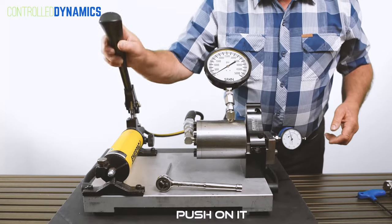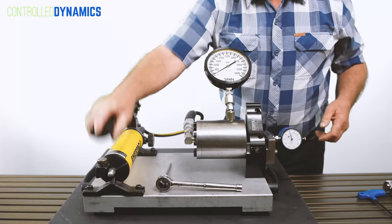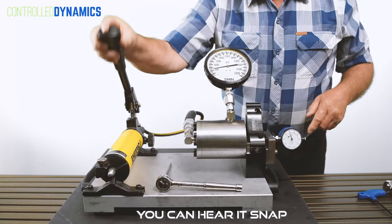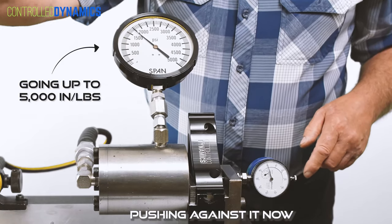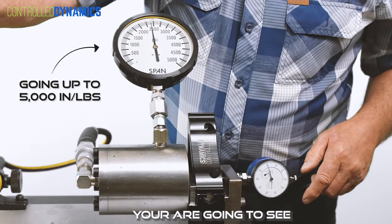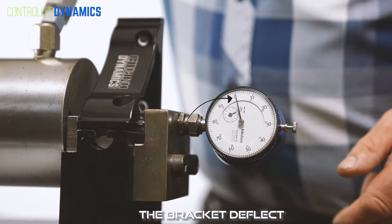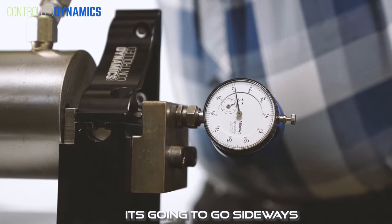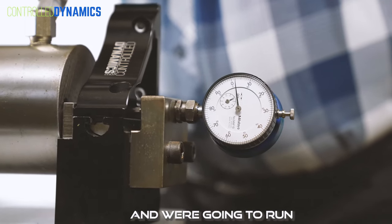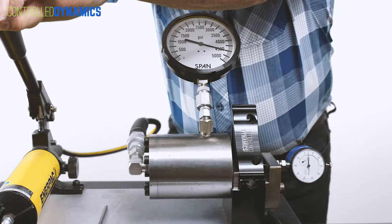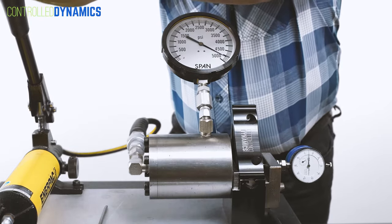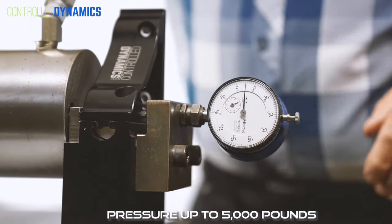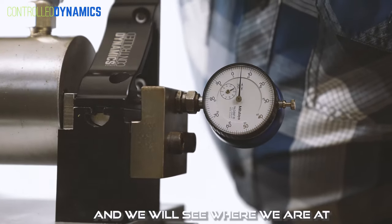I'm going to push on it. You can hear it snap, pushing against it now. So we're putting pressure on it. You're going to see the bracket deflect. It's going to go sideways, and we're going to run the bracket pressure up to 5,000 pounds and we'll see where we're at.